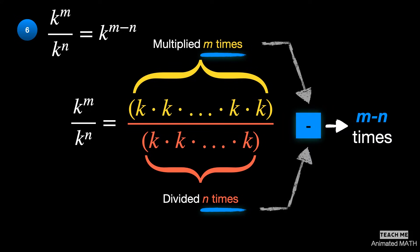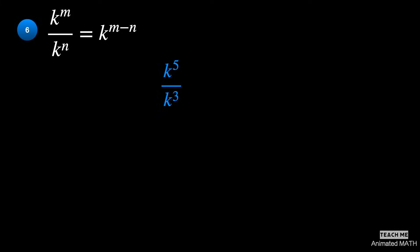Here is an example. k^5 divided by k^3 is equal to multiplying k 5 times and dividing it by k 3 times, or k squared.